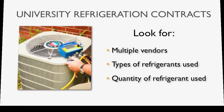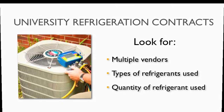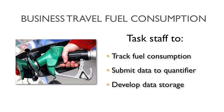In another example, a university may have multiple vendors who maintain cooling and refrigeration systems on its campus, but who don't itemize the type and quantity of refrigerants used during service calls. The facility management team then needs to sit down with those vendors and come up with a way to get that information on a regular interval. In yet other instances, entities can task their staff to track fuel consumption from business travel and submit that to the designated inventory quantifier. In addition to collecting the data, companies, institutions, and entities should develop systems to facilitate data storage.